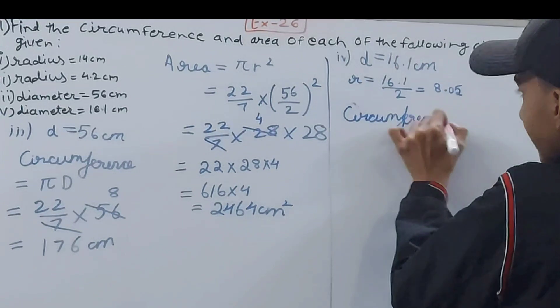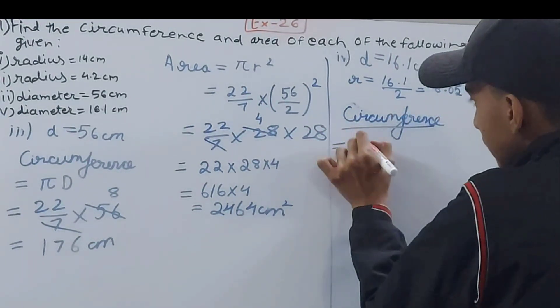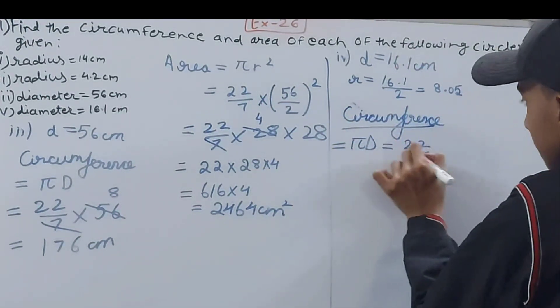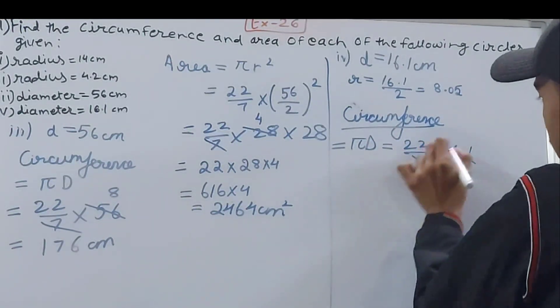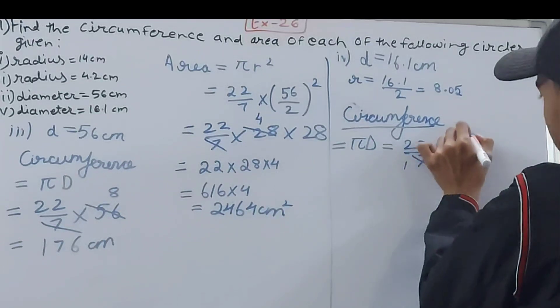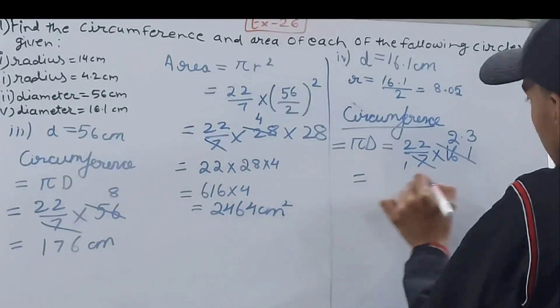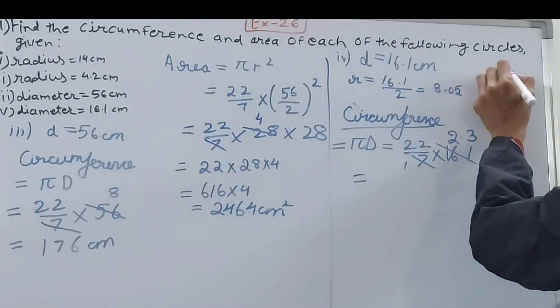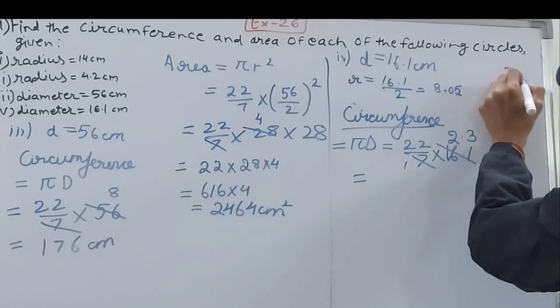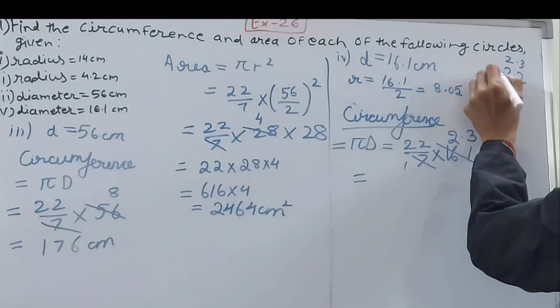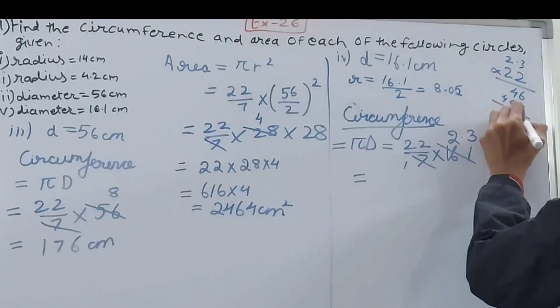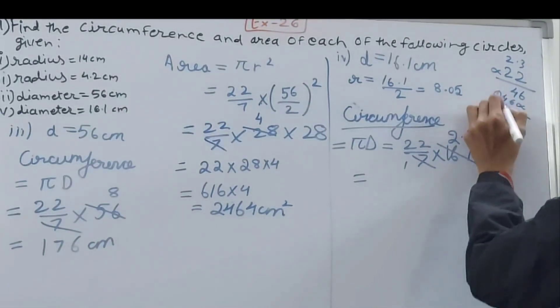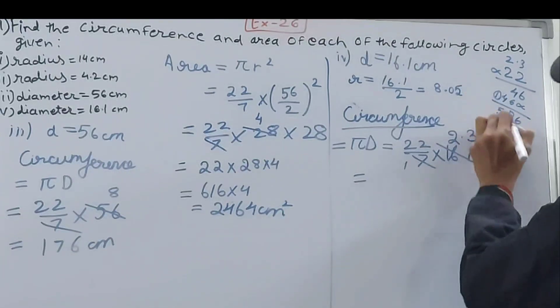So π × d, that is 22/7 × 16.1. Cancel this so this will go 2.3 times. Now see the multiplication we've got here, 22 × 2.3, so 646, 6 and 4 here, 6, 10, 1, 5. 50.6 centimeters, that's the circumference of my circle.